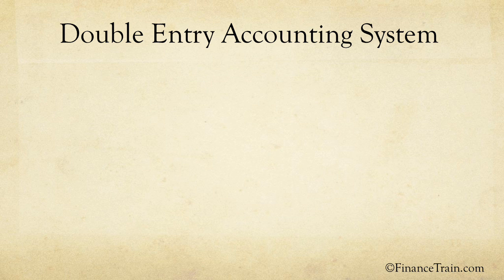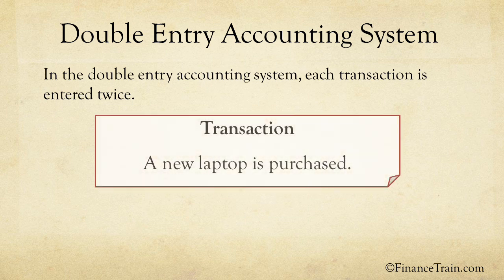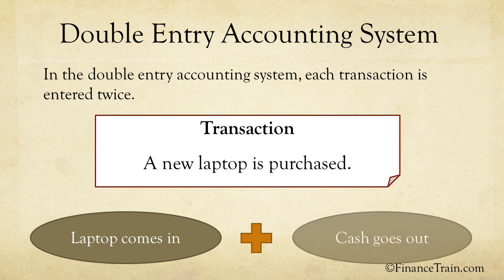The first principle of modern accounting is double-entry accounting. Under this system, each transaction is entered twice, affecting two different things. For example, when you purchase a new laptop for your business, two things happen: a new laptop comes into the business, and the cash is spent to buy this laptop. The accounting records should show both these effects. This method of accounting is credited to an Italian monk by the name Luca Pacioli, who developed this system in 1494. The key advantage is that it helps you balance your books easily using debits and credits.